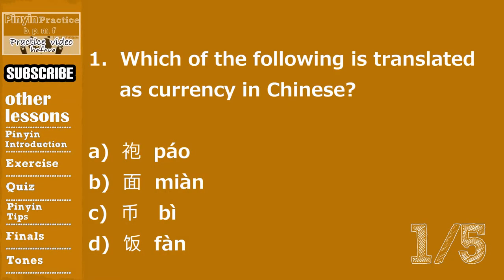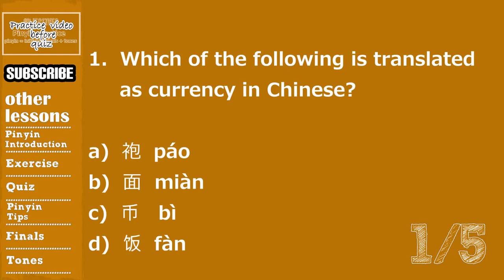Question number one. Which of the following is translated as currency in Chinese? A. 跑 B. Mian C. B. D. 饭